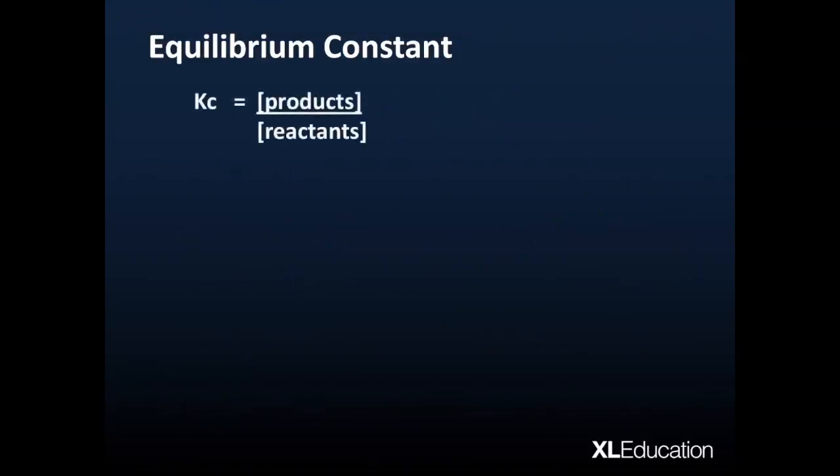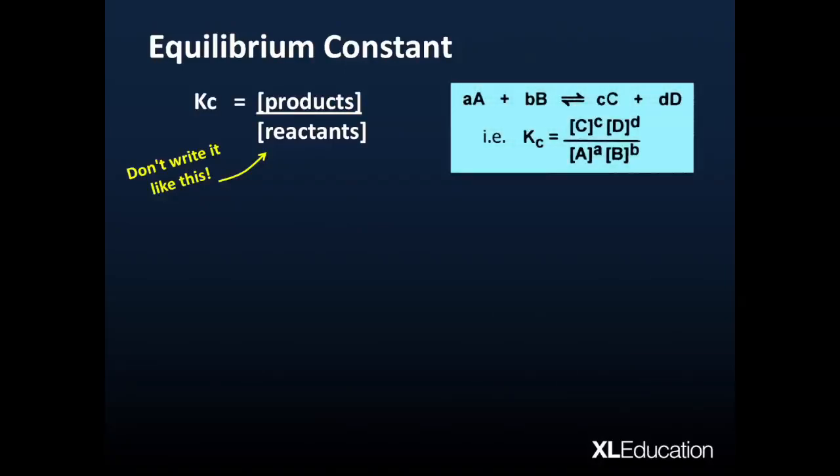Now, in terms of the calculations, as I said, that particular equation is an informal way of describing our Kc. So don't write it like this in your exam. What we'll need to do is have a look at the general formula and then apply it to our actual equation. So in an equation where we've got C and D as the products, and lowercase a and lowercase b are our coefficients. Sorry, these are the reactants. We've got reactants on the bottom here.